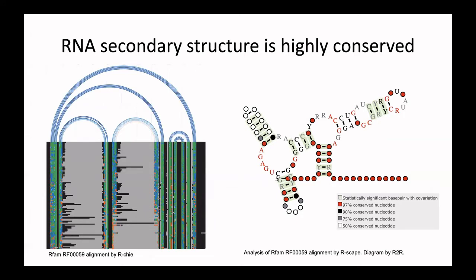The secondary structure is important because we know it folds quickly and provides a scaffold for later folding into the tertiary functional structure. What we observe in many non-coding RNAs is that the RNA structure is highly conserved — the sequence can vary a lot, but the structure is very strongly conserved. This is shown in databases like RFAM that collect RNA alignments based on structure. Assessing where the alignment is significant is a real endeavor; software like Airscape has really helped us better understand what is conserved in RNA structure.